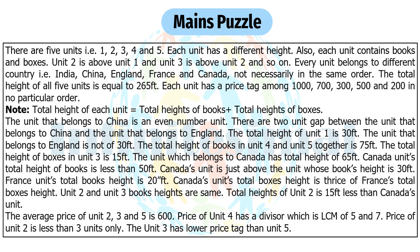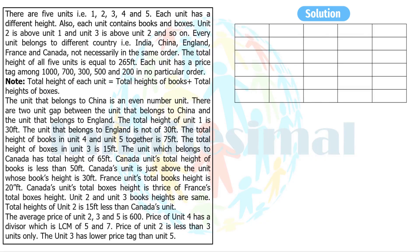I hope you all have solved it and reached the correct answer. Now I'm going to solve it so you can see. There are five units — one, two, three, four, and five — each unit has a different height, and each unit contains books and boxes.